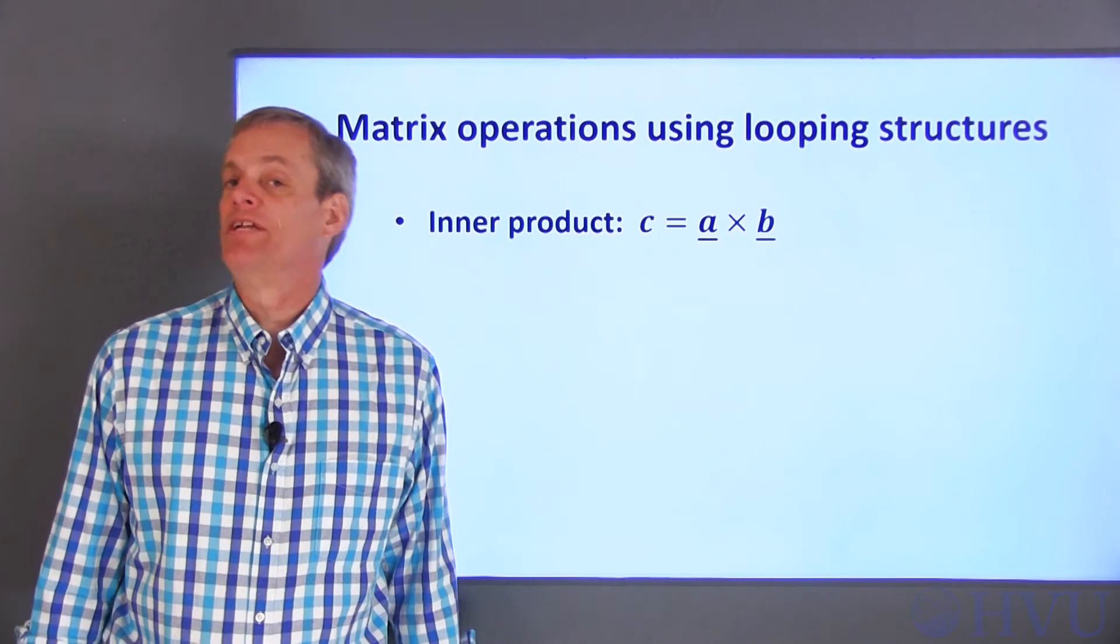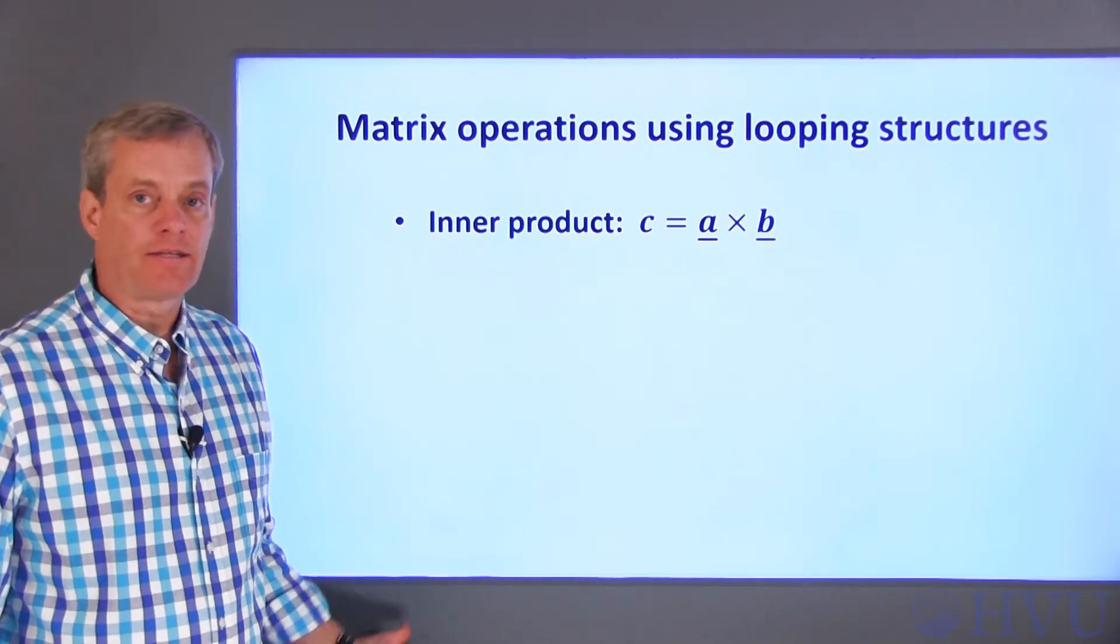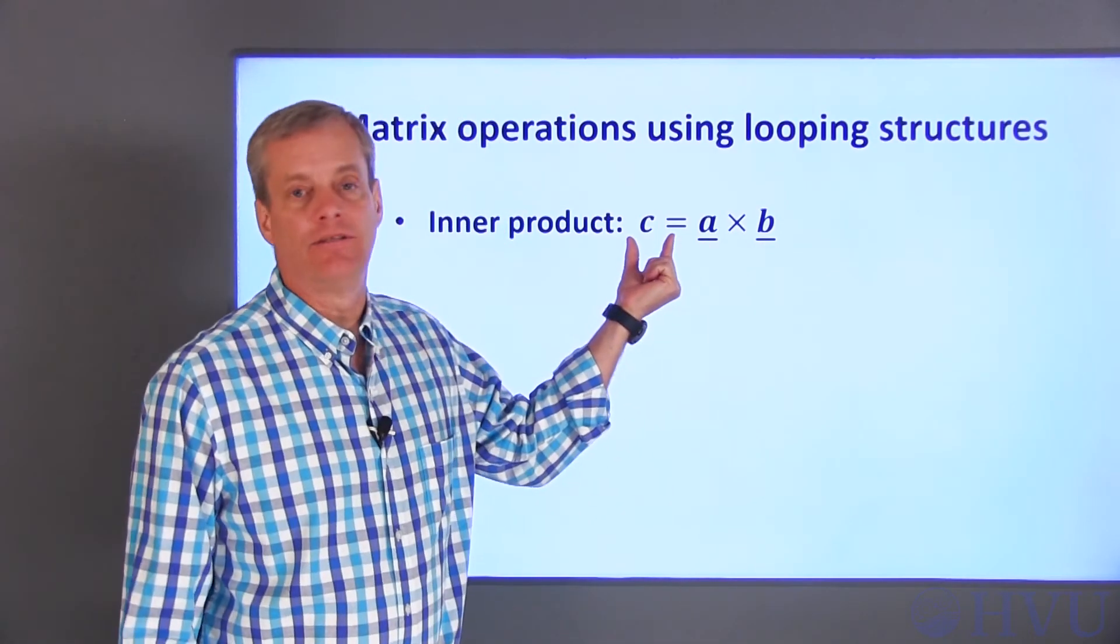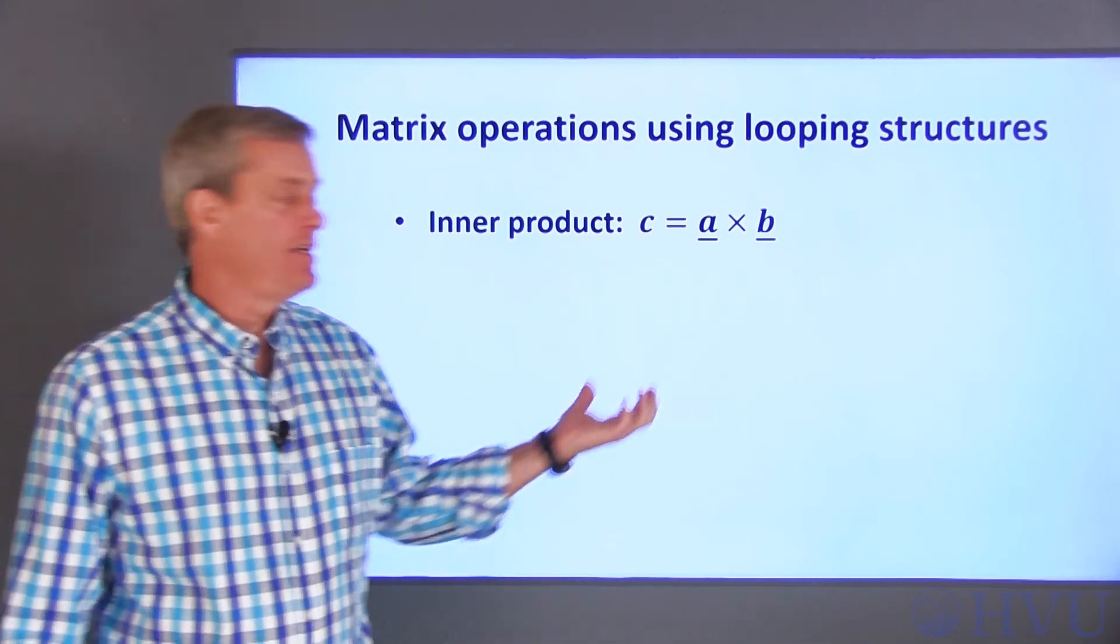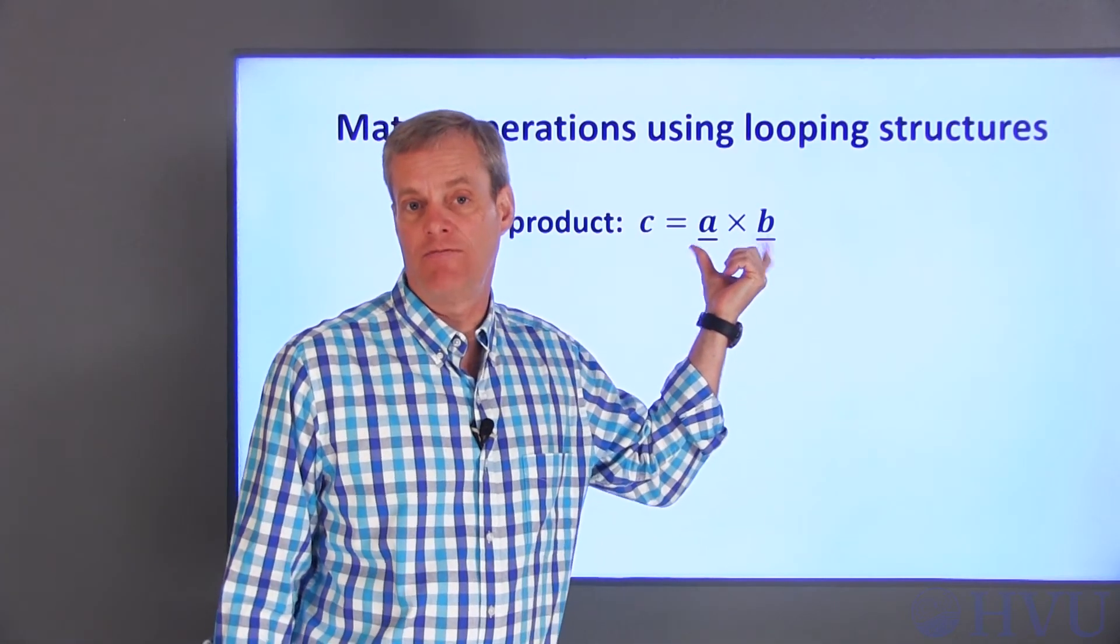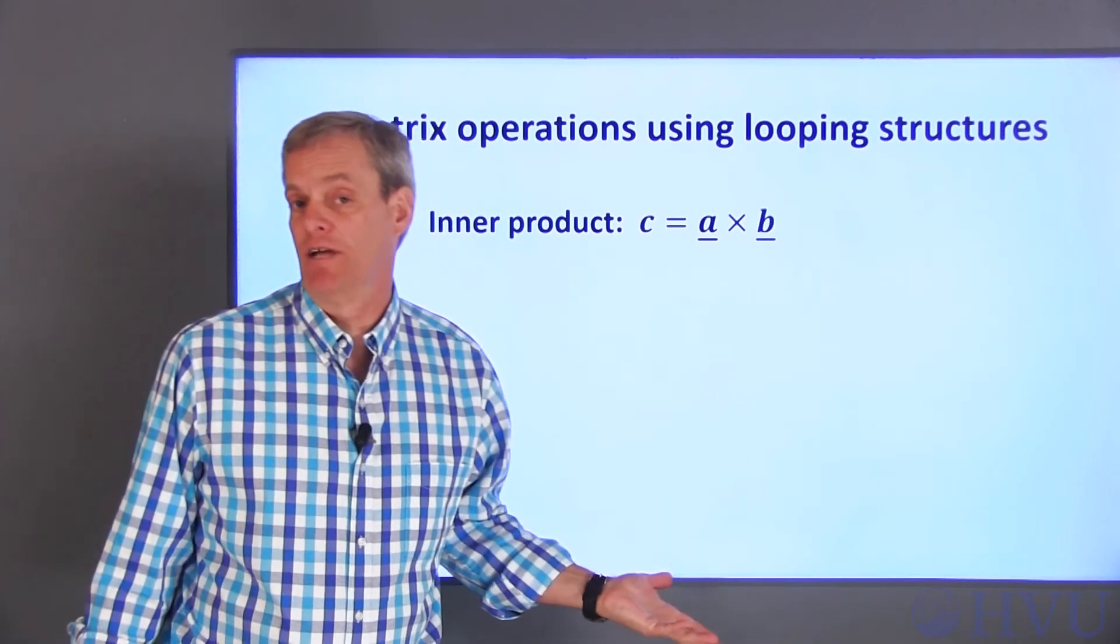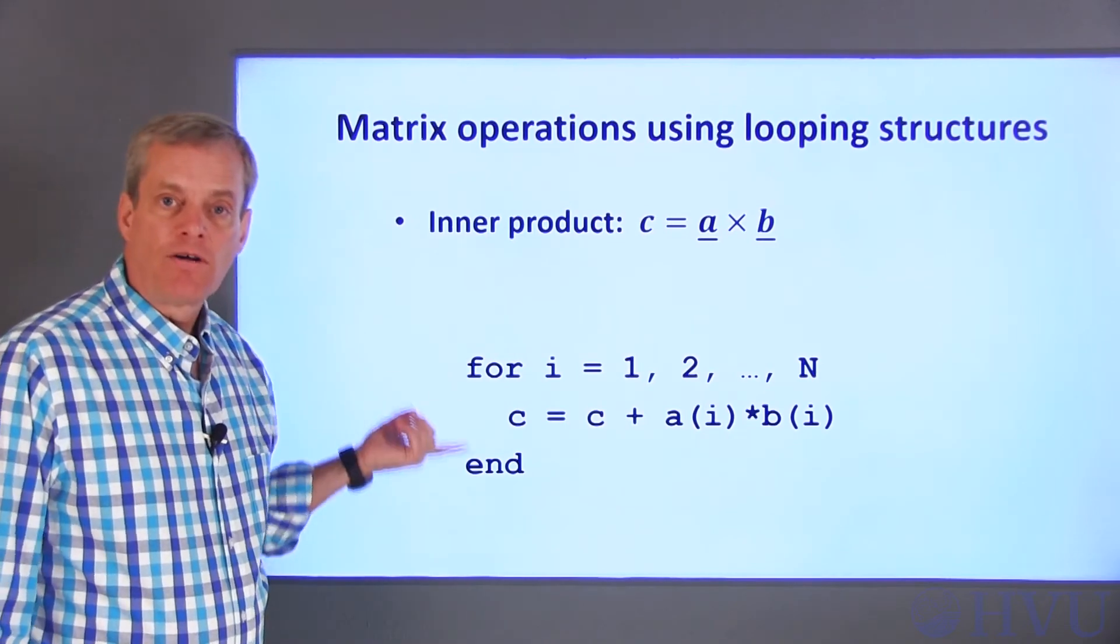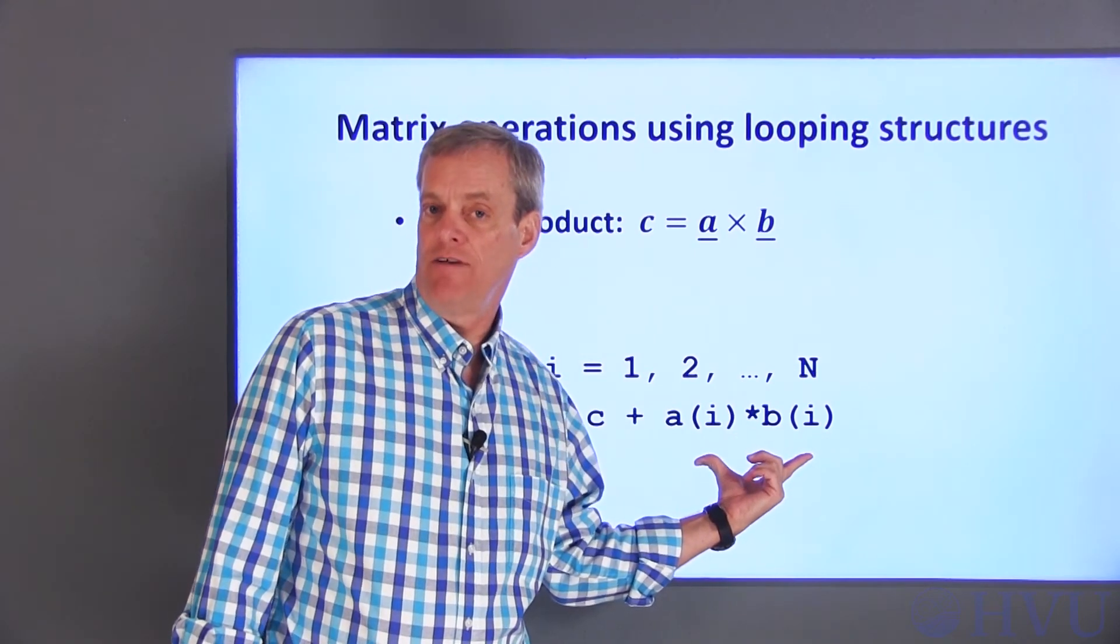Next, I'll program an inner product between two vectors. To perform an inner product, I multiply a row vector A times a column vector B to get a scalar C. The inner product is the sum of the products of the individual elements in the A and B vectors, which requires that the A and B vectors have the same number of elements. So the main part of the code will be a for loop that multiplies corresponding elements in the A and B vectors.